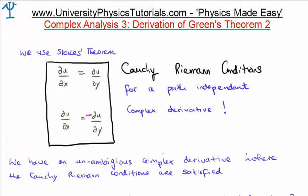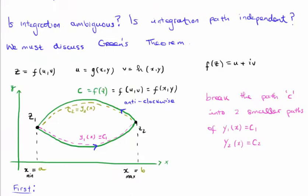We have an unambiguous complex derivative where the Cauchy-Riemann conditions are satisfied. However, we don't know if integration is unambiguous. So, is integration path-independent when we talk about complex numbers, or a number with both real and an imaginary component? This is basically what Green's theorem is all about.